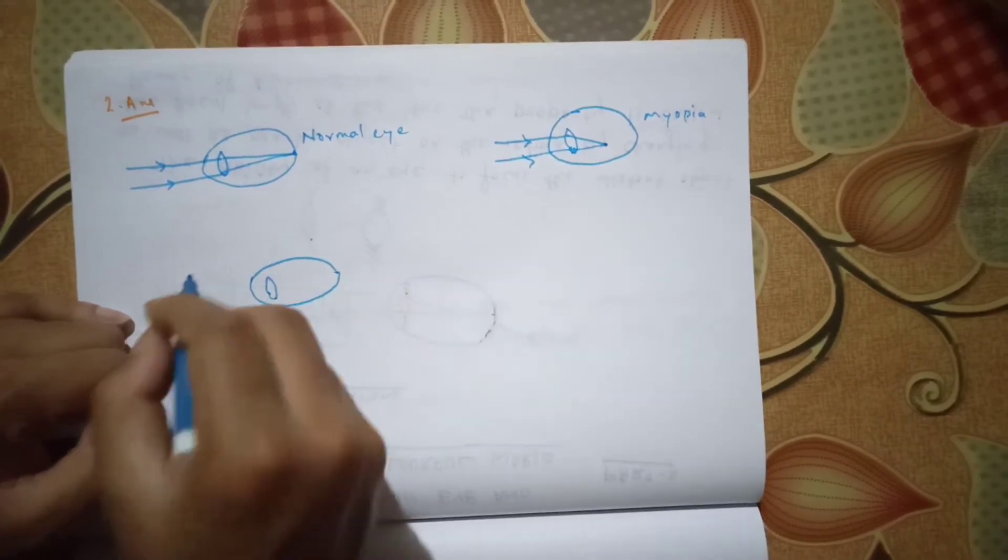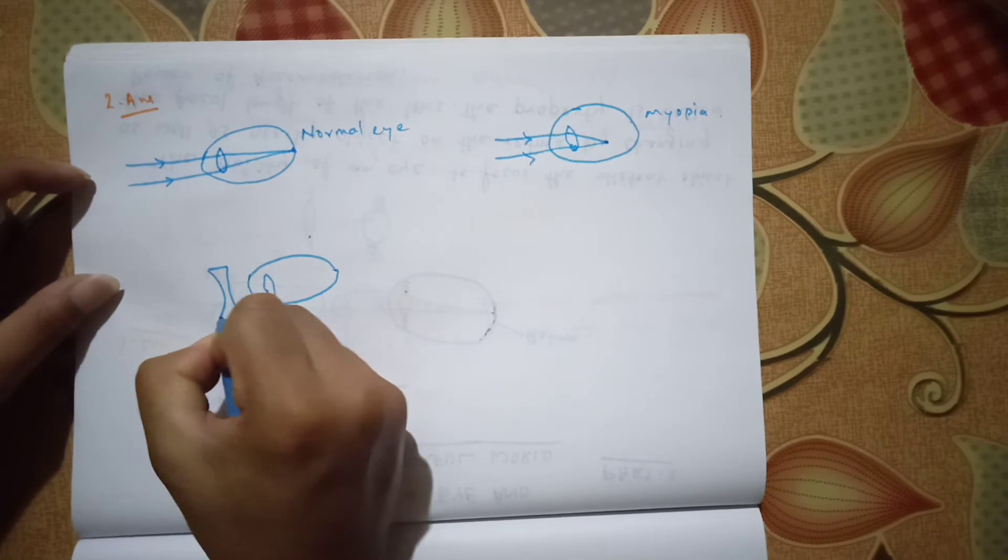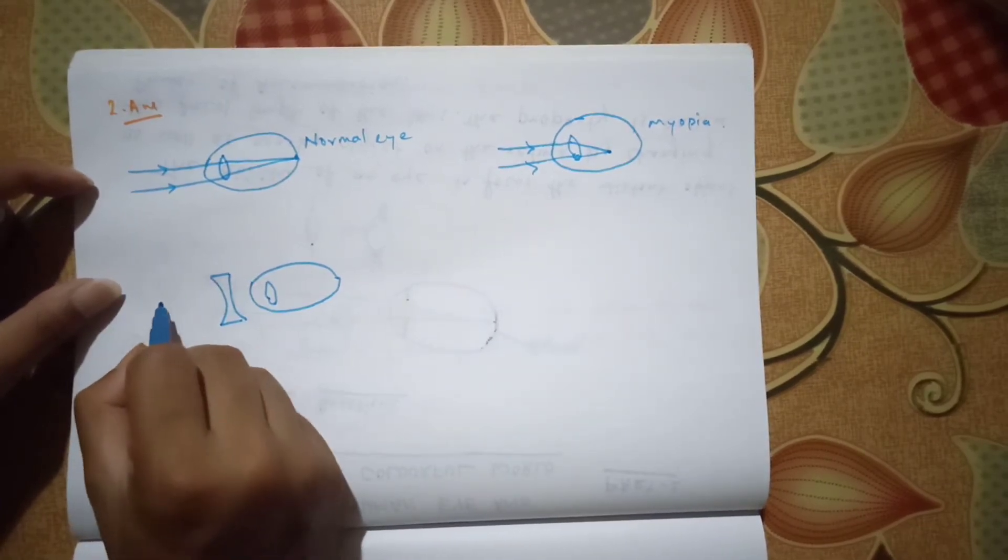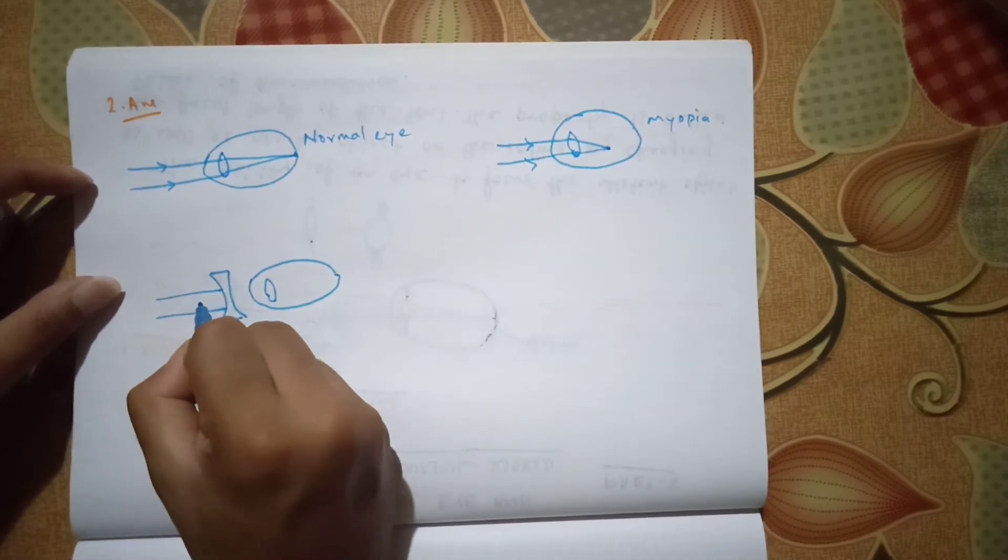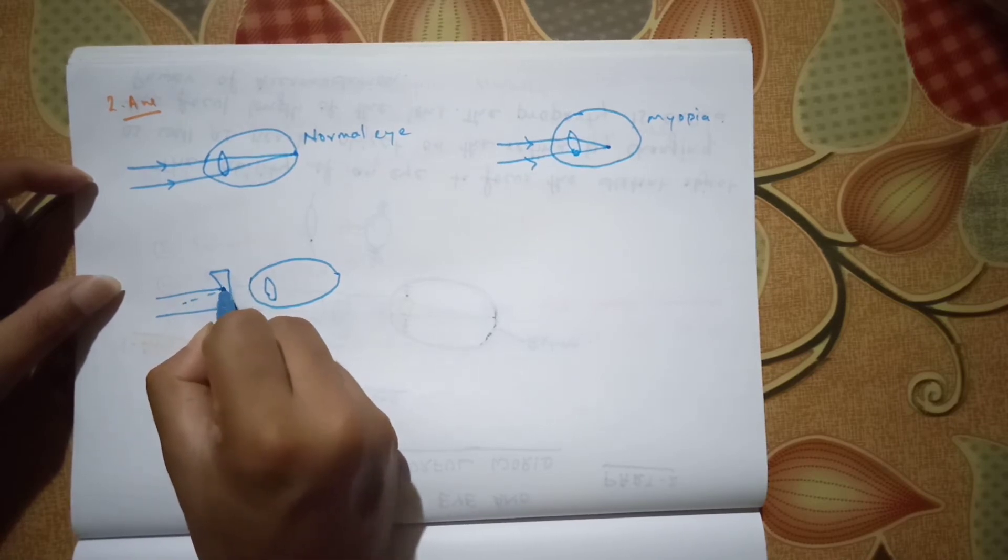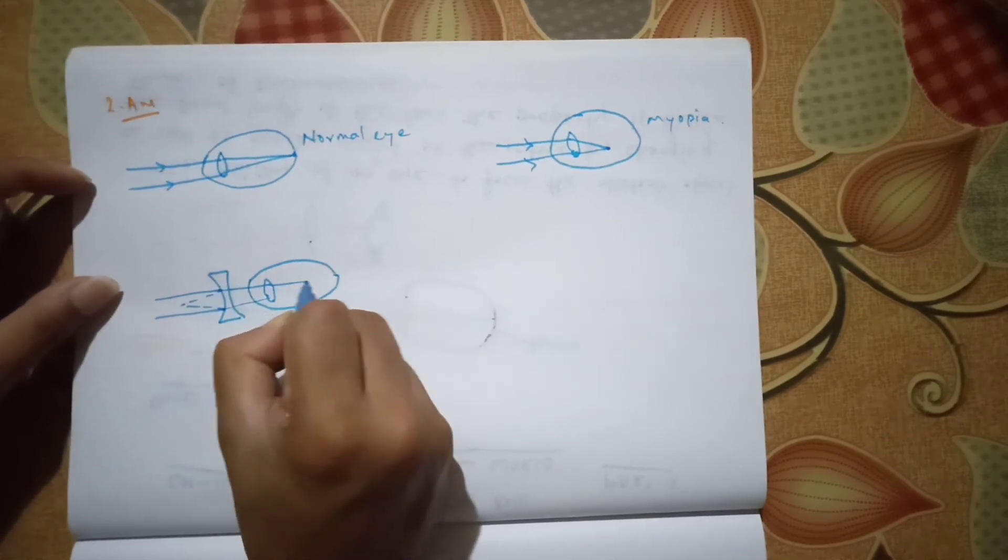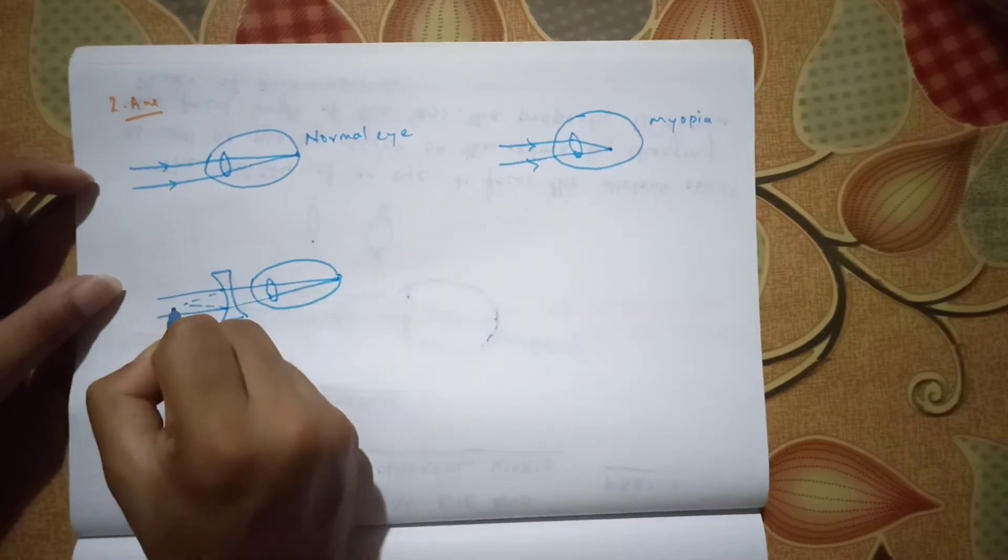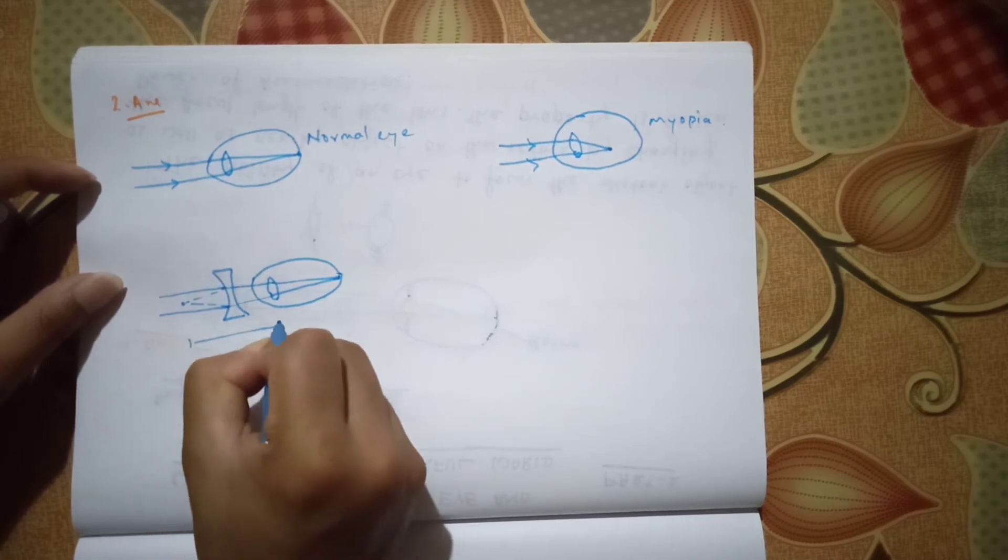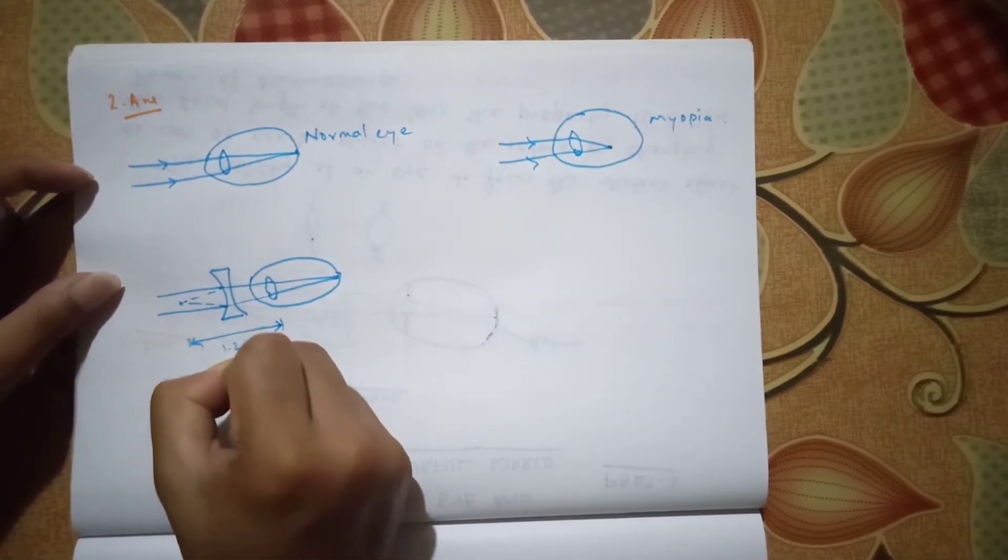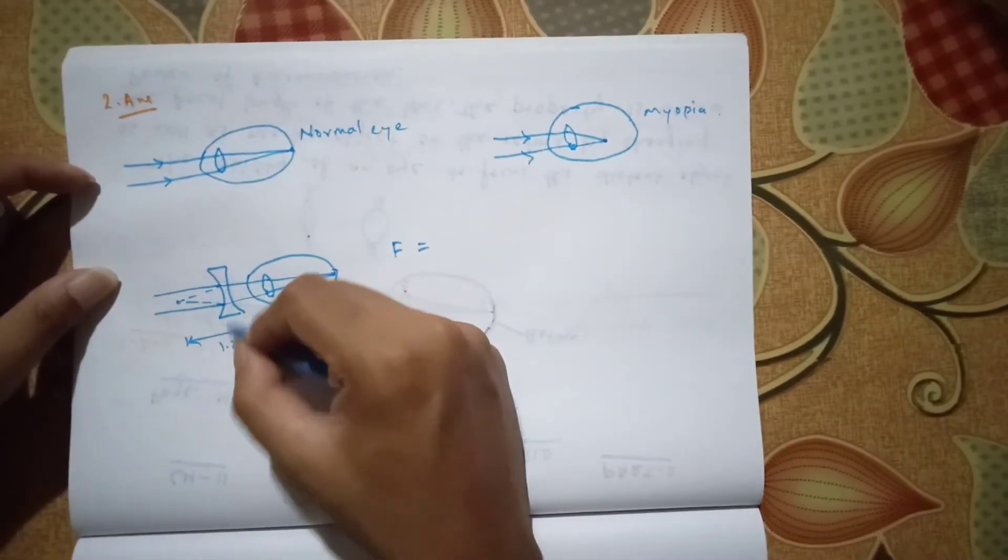This is the eye of a myopia person. Now to solve this problem, we have to draw an eye again. This will be its lens. To solve this problem, we have to put a concave lens here so that the eye will feel like the image is coming from a nearby point. We will have the image on its retina. Now what is its focal length? The focal length is about 1.2 meters.